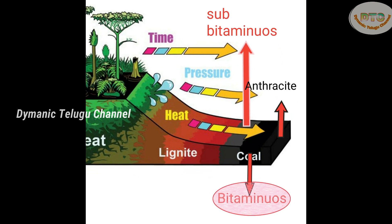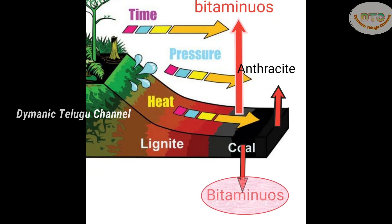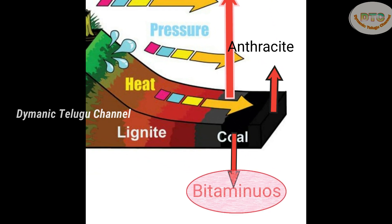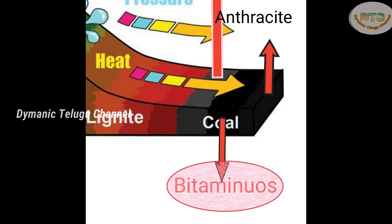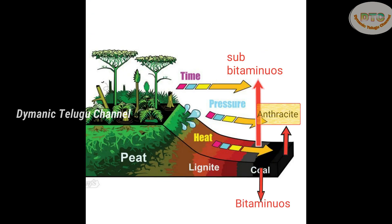In the fifth stage, there is anthracite coal. Anthracite coal is the best form of coal. There is low pollution, a lot of calorific value, high energy, and also high density.